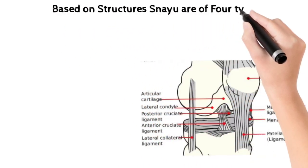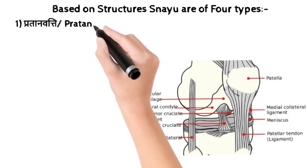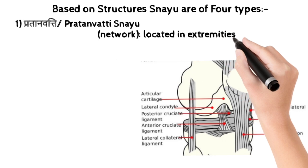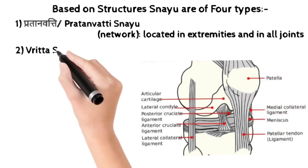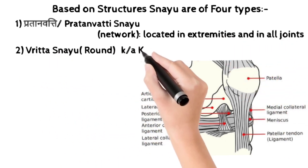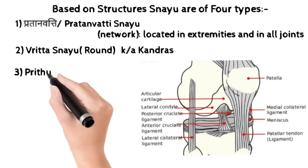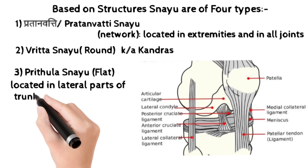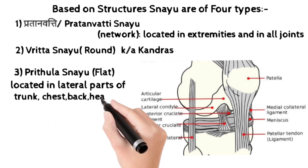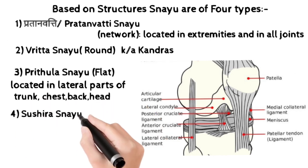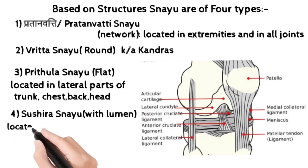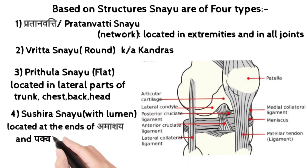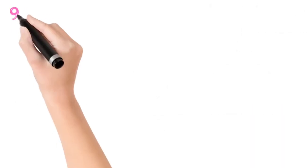Agar hum structure ke basis pe baat karein to 4 types ke hote hain Snayu. Pratanawati Snayu jo ki network type hote hain, yeh located hote hain extremities mein sare joints ke. Vritta Snayu, yeh round hote hain aur inko Kandra bhi bolte hain. Third hai Prithula Snayu jo ki flat hote hain, yeh located hote hain lateral part mein kiski? Trunk, chest, back aur head ki. Fourth hai Sushira Snayu jo ki lumen hota hai jinke andar. Yeh located hote hain end of Amashe aur Pakwashe aur Vasti mein.